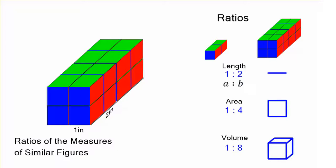Here's the big idea. The length, you can call that ratio a to b, one dimensional. Area is that number squared, a squared to b squared. And volume is a cubed to b cubed.